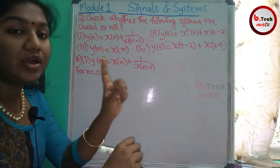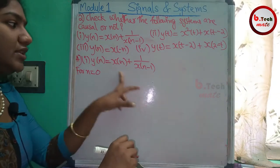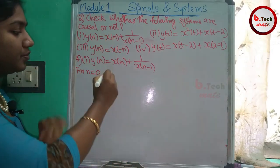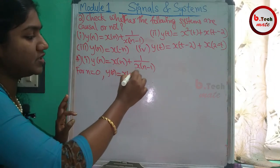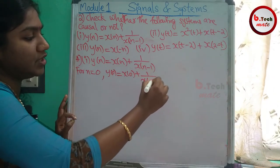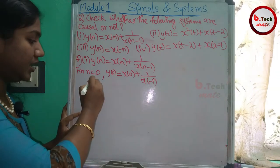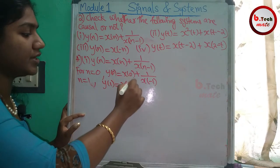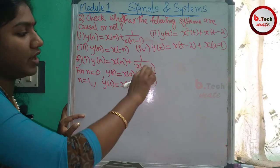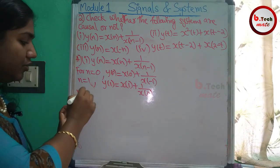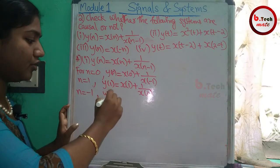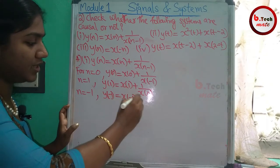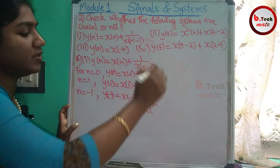For n=0, y[0] = x[0+1] + x[0-1] = x[1] + x[-1]. For n=1, y[1] = x[1+1] + x[1-1] = x[2] + x[0]. For n=-1, y[-1] = x[-1+1] + x[-1-1] = x[0] + x[-2]. We need to get the output-input relations for each condition.